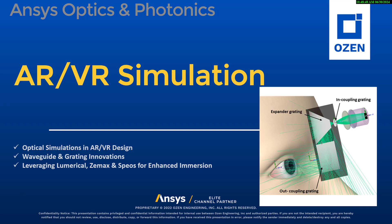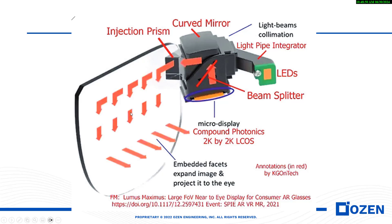Let's first look at the workflow of ANSYS. As you see here in this slide, this is one sample of AR glasses with a luminous system. We have an LED here, we have a light pipe, we have some optical system, we have a micro-LED display, and we have a glass. As you see in the glass, we have an in-coupling and then we have some out-coupling to the eyes.